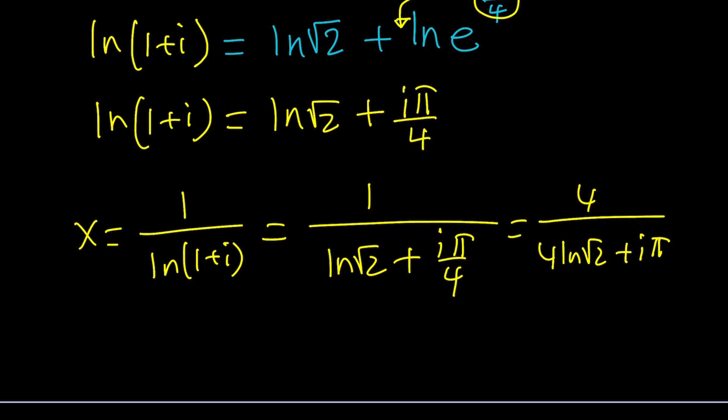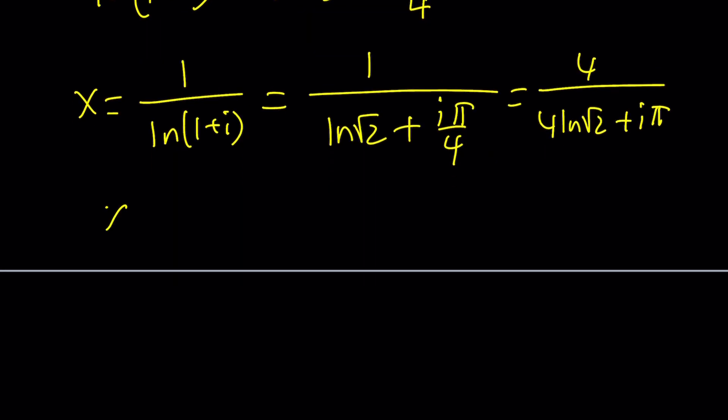And if you really want to write ln(√2) as ln(2^(1/2)), the 1/2 is going to cancel out, giving 4/(2ln2 + iπ). But this answer is not in the simplest form because we have a complex number at the bottom. So we need to get rid of that by multiplying by the conjugate, which is 2ln2 - iπ.